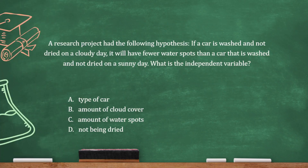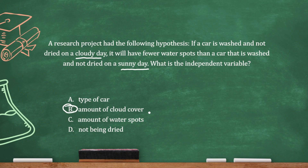A research project had the following hypothesis: if a car is washed and not dried on a cloudy day, it will have fewer water spots than a car that is washed and not dried on a sunny day. What is the independent variable? The independent variable is what you change in an experiment — the cause, while the dependent variable is the effect. The only thing different between these two groups is sunny versus cloudy day, so the closest answer choice is B, the amount of cloud cover. The dependent variable would be the amount of water spots.